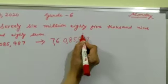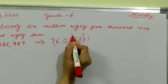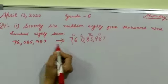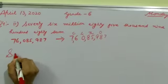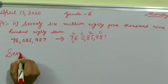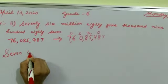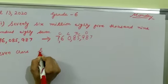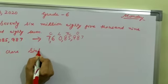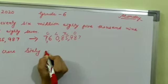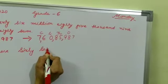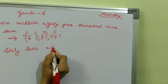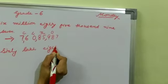This is ones and thousands. Now 7 crore — 60,85,000.